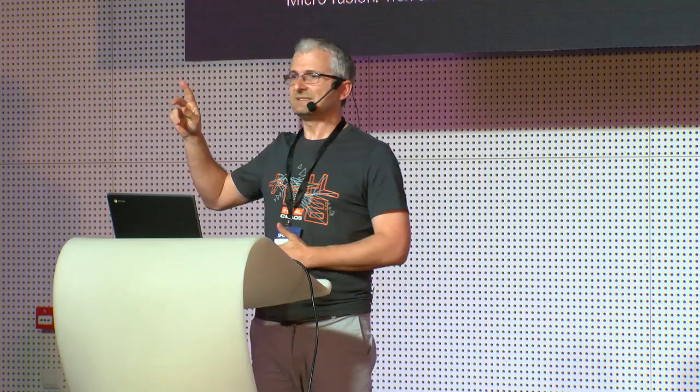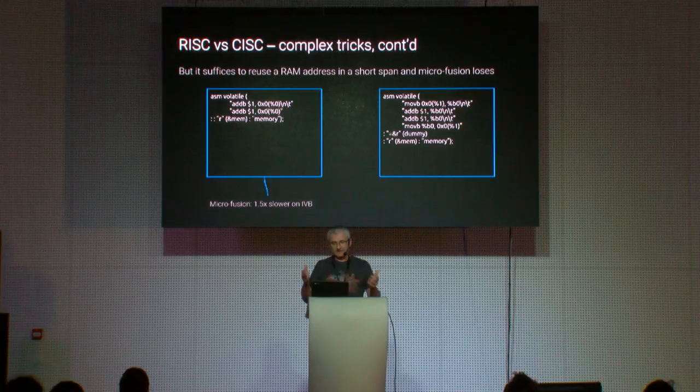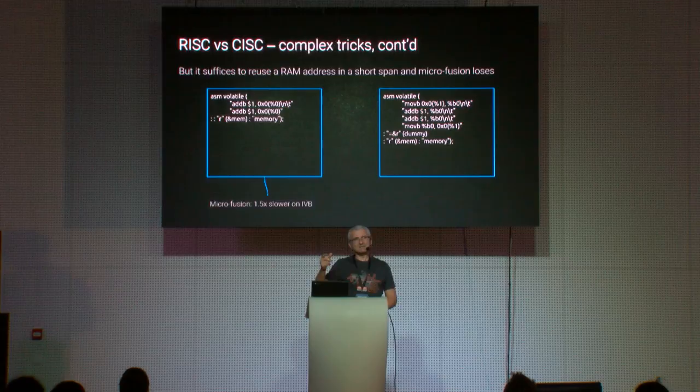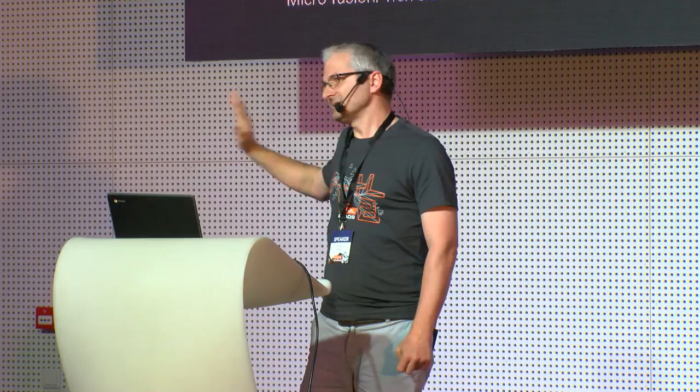Microfusion has its drawbacks. When code touches the same memory address twice in quick succession — for example, incrementing the same address twice — the complex memory-referencing version is actually 50% slower than the explicit load-increment-store version on Intel Ivy Bridge. The benefit of microfusion works only for streaming-type code that touches memory addresses once and moves on. As soon as there is address reuse in a short span of code, microfusion loses.